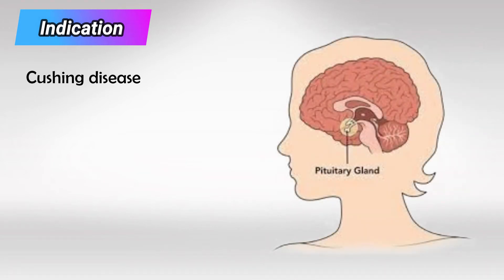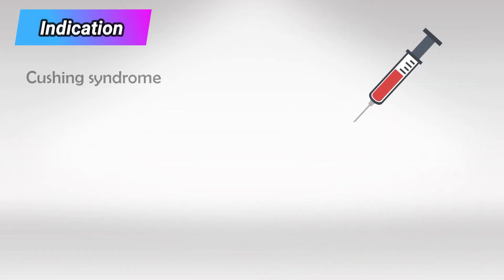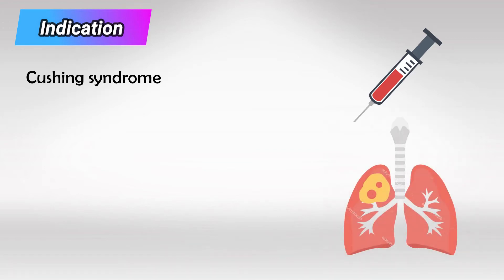This is a test we use to differentiate between Cushing disease and Cushing syndrome. Cushing disease is a pituitary gland tumor secreting ACTH, which results in high levels of cortisol. Cushing syndrome is any other cause of elevated cortisol — for example, iatrogenic injections of cortisol or a paraneoplastic tumor outside the pituitary gland secreting ACTH.